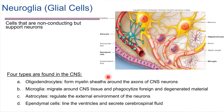Let's take a look at the supporting cells. The neuroglia are the cells that support neurons. Remember, neuroglia are not conducting — they don't conduct electrical signals. Rather, they're more there to help maintain the environment for the neurons.